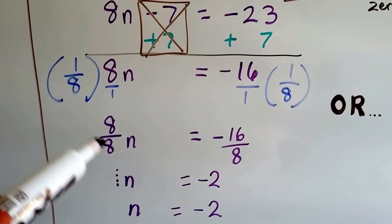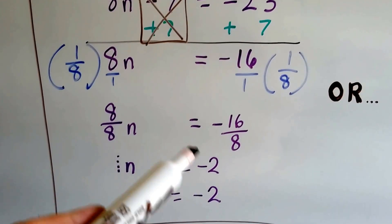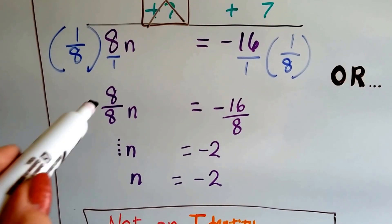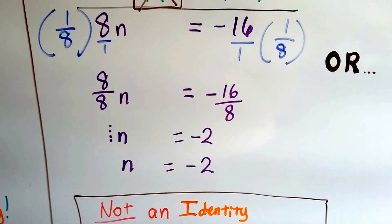We get 8 over 8n equals negative 16 over 8. And that's going to give us a negative 2. We get our friend the invisible 1 that we don't need to write, so we get n is equal to negative 2.